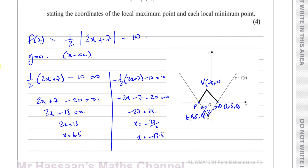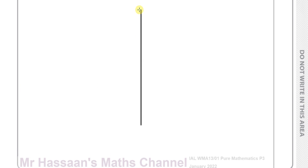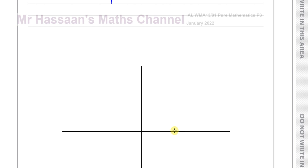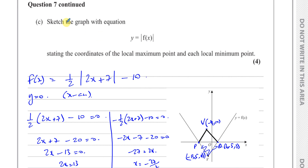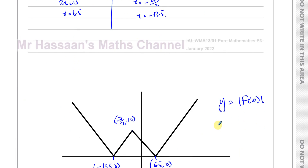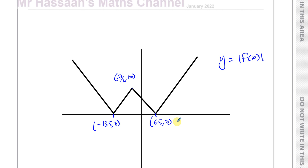Now we have all the information to sketch the graph of Y equals the modulus of F of X. It crosses the X axis at negative 13.5 and 6.5, and has a local maximum at negative 7 over 2, positive 10. The two minimum points are at the X-axis crossings. That's the answer to part C of question 7.